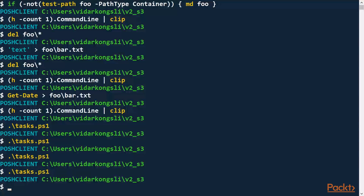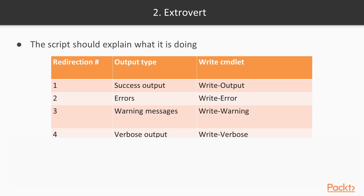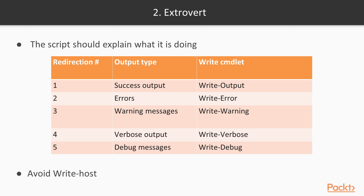The second trait is extrovert. Extrovert is a term from psychology, and calling a computer script extrovert might be a slight misuse of the term, but basically what I mean here is that the script should report what it is doing. PowerShell has several redirection streams that are useful for this purpose. We can use the different write cmdlets to give information about the script executing, denoting the purpose of each message. I would recommend avoiding using the write-host cmdlet, which explicitly sends output to the console host and prevents it from being handled properly.